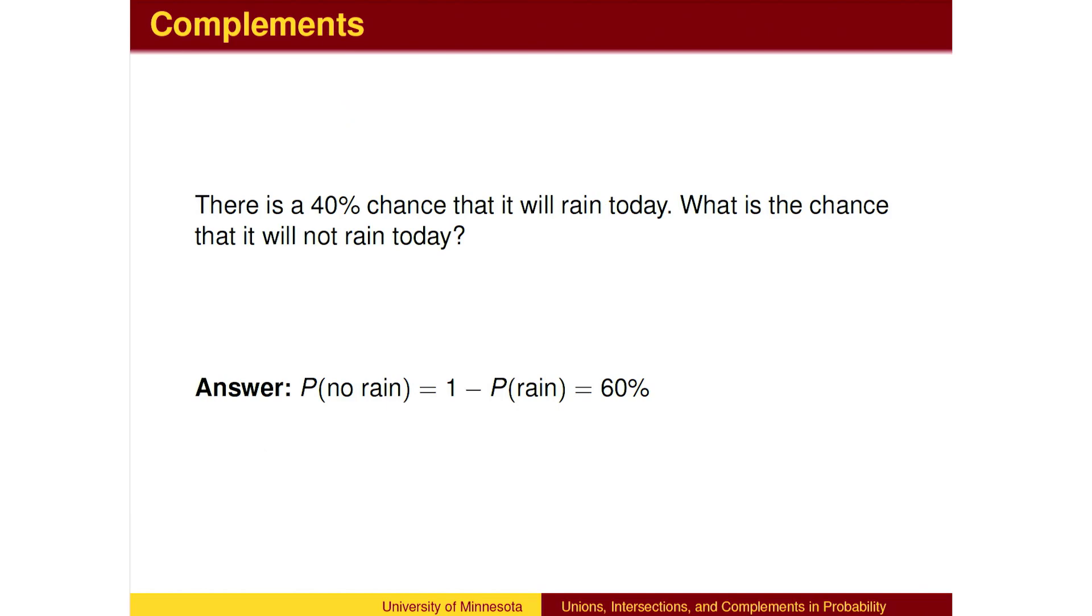The last word we need to understand is NOT. We simply need to find the portion that is excluded. If there is a 40% chance of rain today, the remainder, 60% of the time, it won't rain.